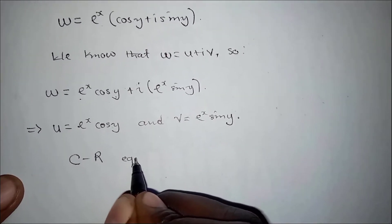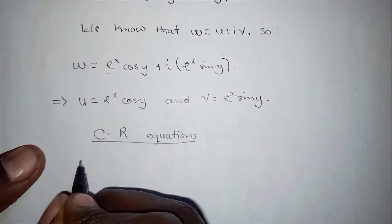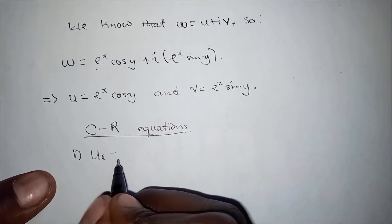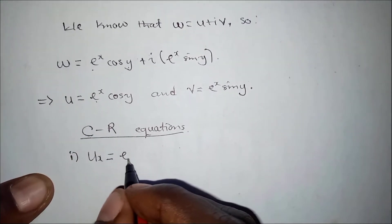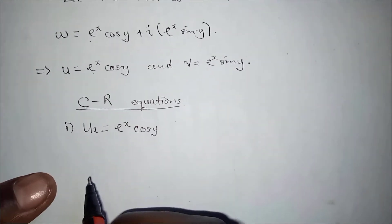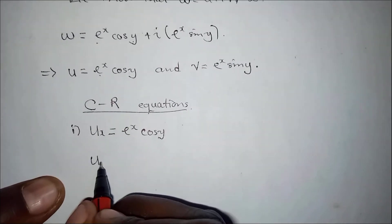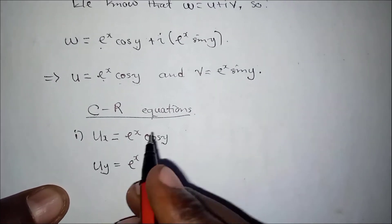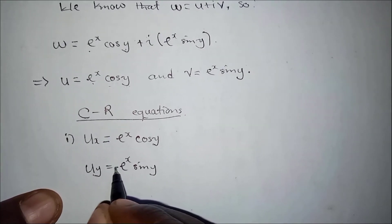Now for the Cauchy-Riemann equations, let's find all the partial derivatives. The first one: u differentiated with respect to x — this part changes, so we have e^x·cos y. Then u with respect to y: we keep e^x and differentiate cos y to get negative sine, so ∂u/∂y = −e^x·sin y.